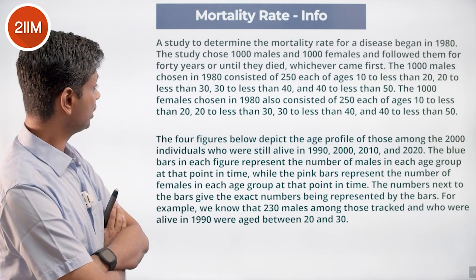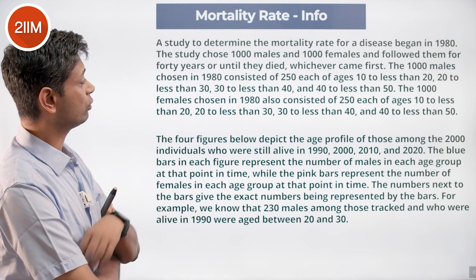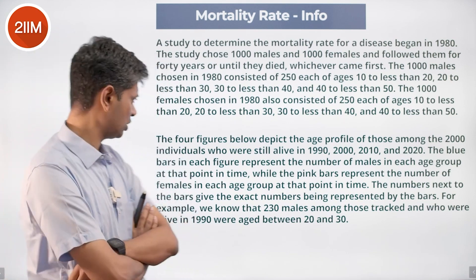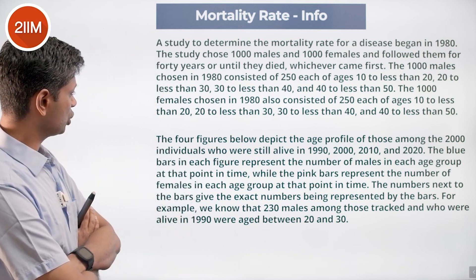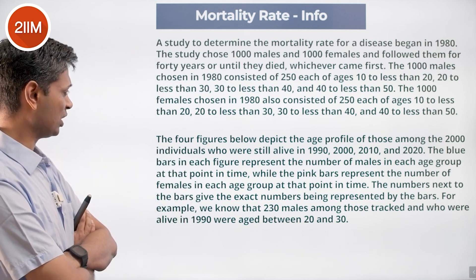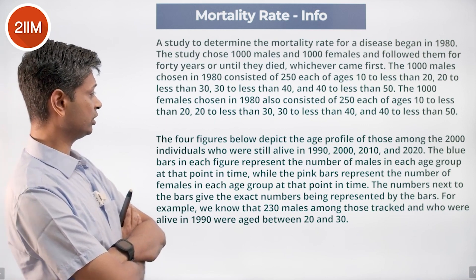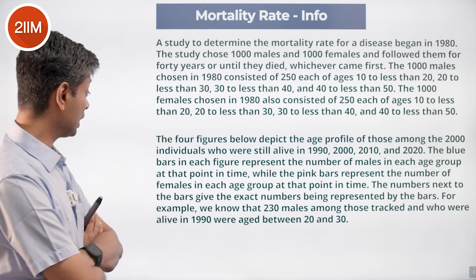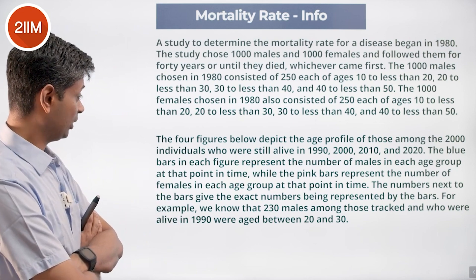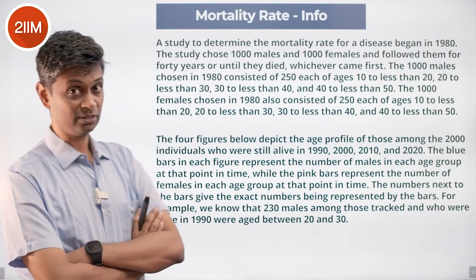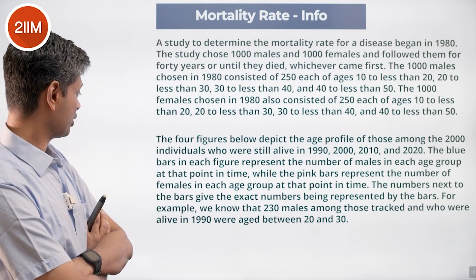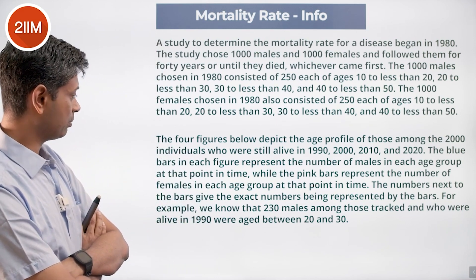The 1000 females chosen in 1980 also consist of 250 each in age groups 10 to 20, 20 to 30, 30 to 40, and 40 to 50. The four figures shown below depict the age profile of those among the two thousand individuals who were still alive in 1990, 2000, 2010, and 2020. The blue bars represent the number of males while the pink bars represent the number of females. The numbers next to the bars give the exact numbers being represented.